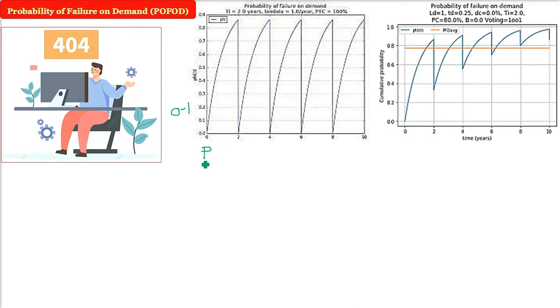So the probability that whenever we are demanding, requiring, or expecting a certain function from the software, the software is failing to provide it.